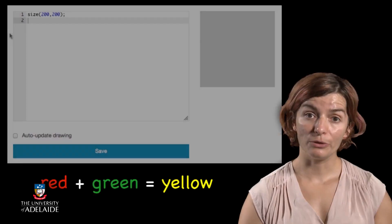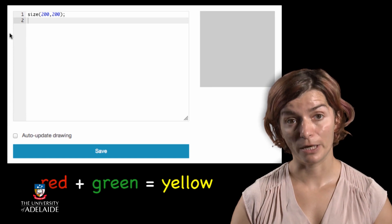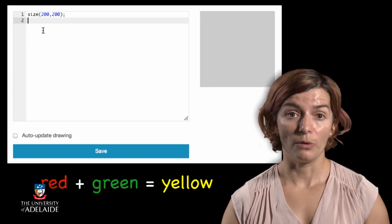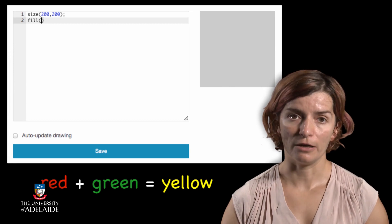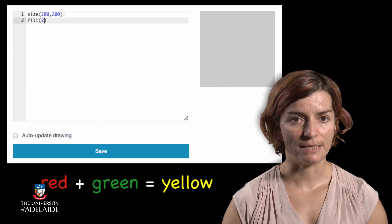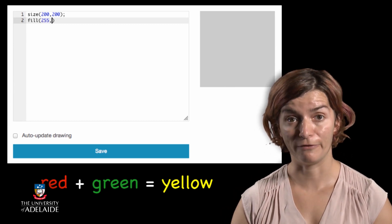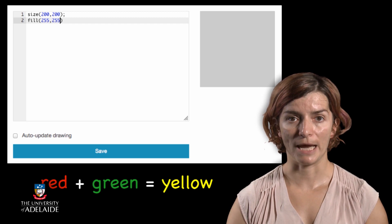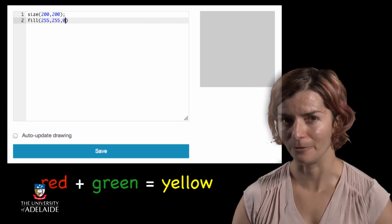If we want to create yellow, we need to remember that red plus green equals yellow. So if we add all the red and all the green and none of the blue — a fill of 255, 255, 0 — then we should obtain yellow. Let's try to fill a circle.